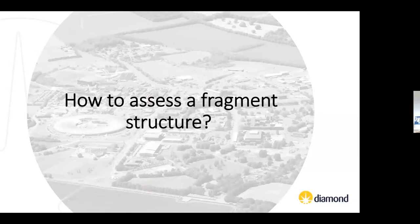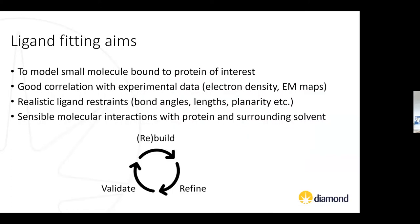The first part of the presentation covers how to assess not just a fragment structure but any liganded structure you're going to use for further analysis. From a crystallographer's perspective, the key aim when doing ligand fitting is to model the small molecule bound to your protein of interest, ensuring good correlation with the experimental data — most often electron density or cryo-EM maps — and ensuring realistic ligand restraints with sensible bond angles, bond lengths, and good planarity. This is an iterative process: build, refine, validate, correct, refine, validate again.